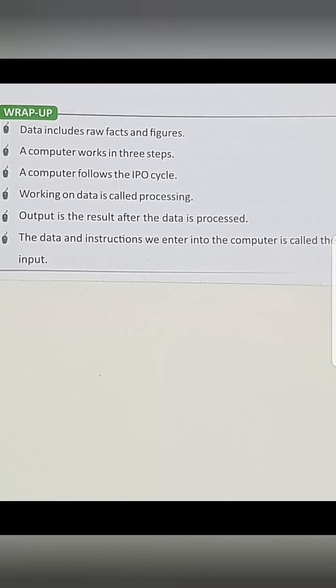Next page number 23. Wrap up: Data includes raw fact and figure. A computer works in 3 steps. Computer follows the IPO cycle. IPO means input, process and output.